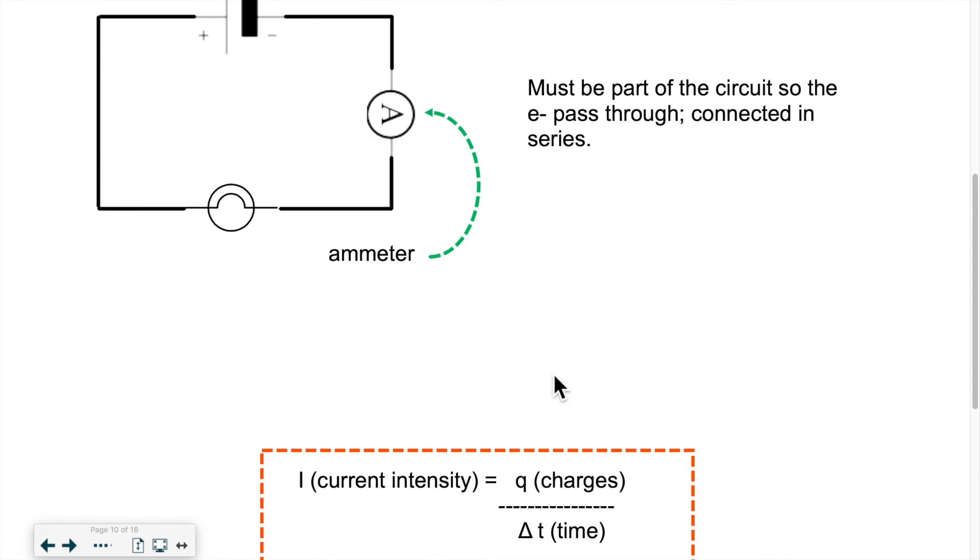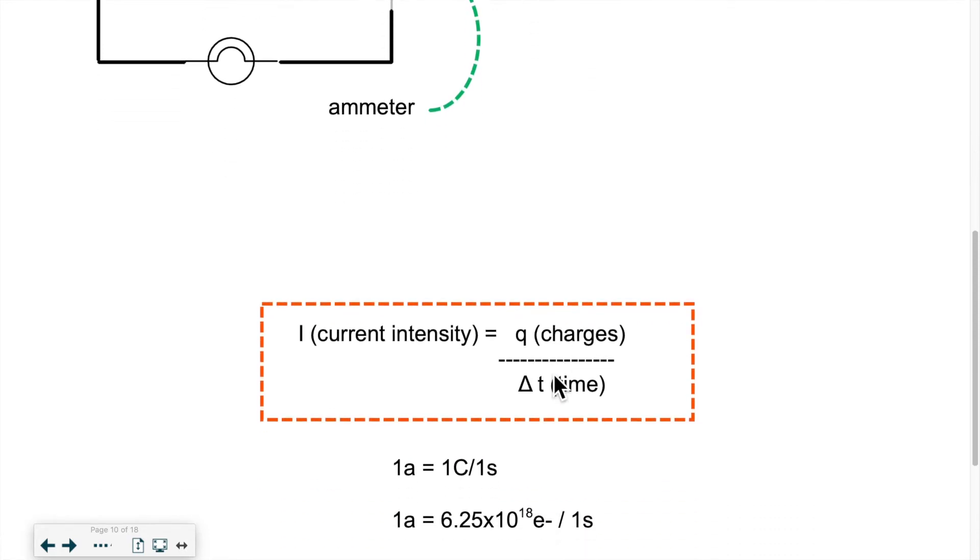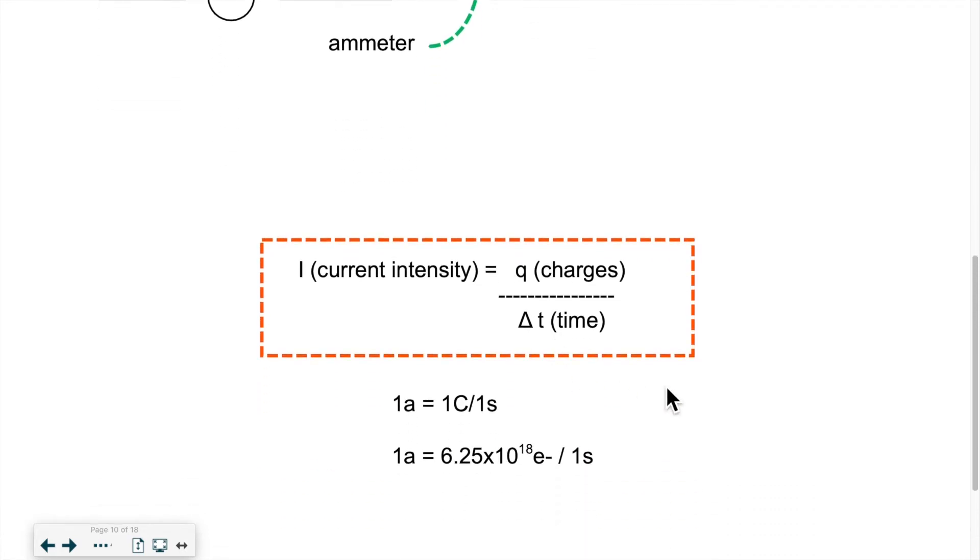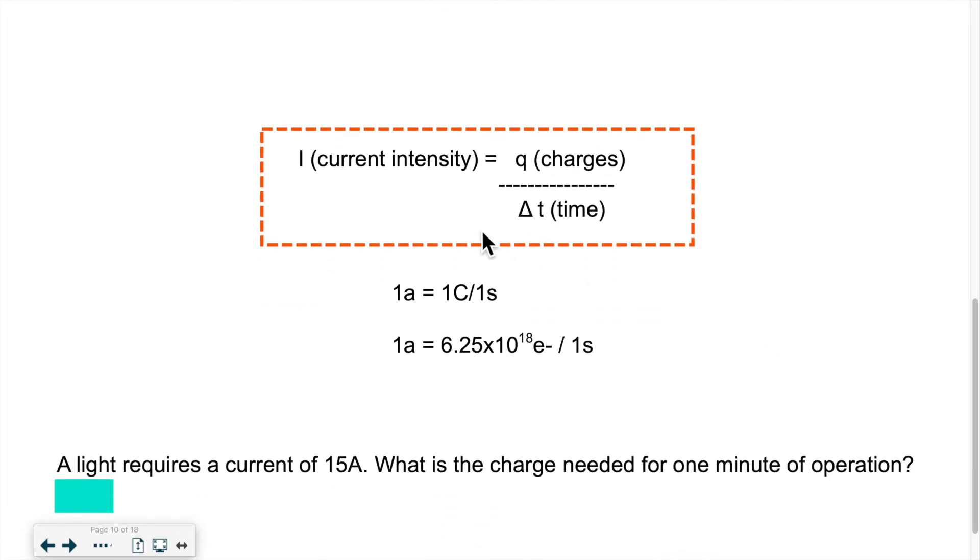How do we actually calculate current if we have to do calculations? Current intensity is a measurement of the number of charges that pass through the circuit per unit of time. This is how it looks mathematically. I is equal to Q, which we know as the letter representing charges, over delta T, the variation of time.